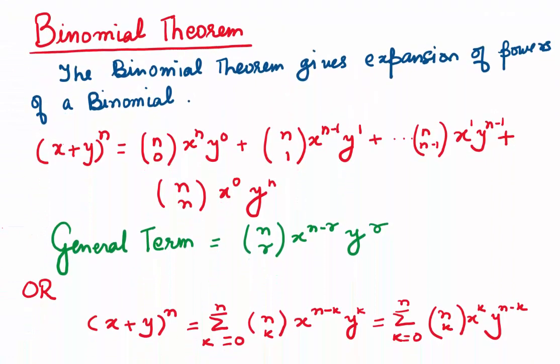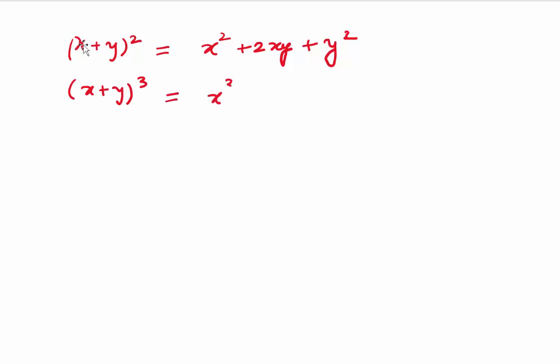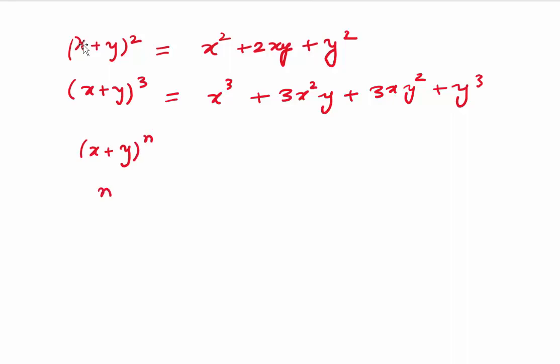Then what is the binomial theorem? The binomial theorem gives us the expansion of powers of a binomial. You are already familiar with some of the binomial expansions like x plus y whole square, which is x squared plus 2xy plus y squared. x plus y whole cube is x cube plus 3x squared y plus 3xy squared plus y cube. You have already done all this in school. Now you can easily expand a binomial of the form x plus y to the power n when n is small — you can multiply and find the expansion. But when n is large it becomes very tiresome, so the formula comes handy.